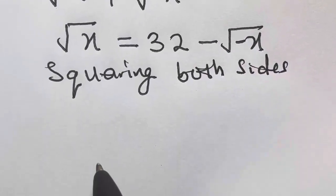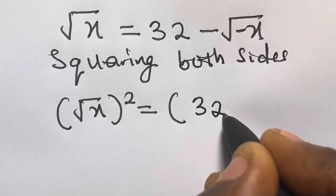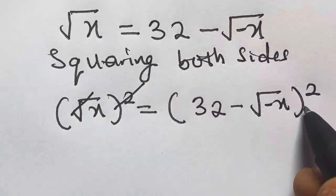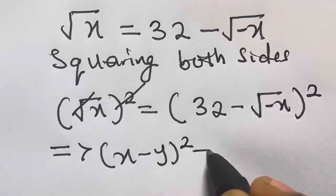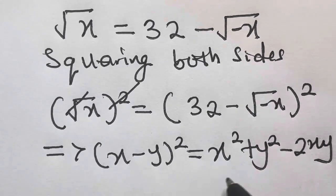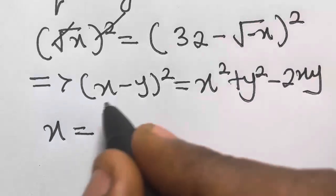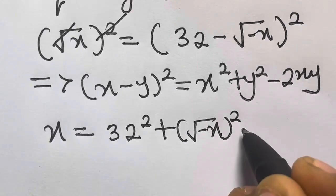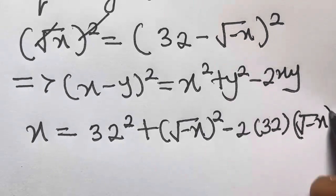Squaring both sides, we have: (√x)² = (32 − √(−x))². We cancel the square on the left. To expand the right side, recall that (x − y)² = x² + y² − 2xy. Applying this, we get: x = 32² + (√(−x))² − 2 × 32 × √(−x).